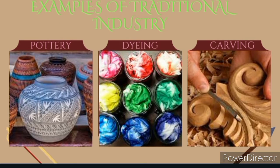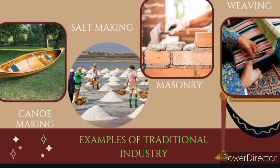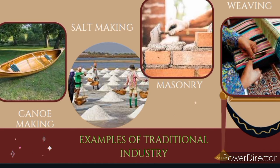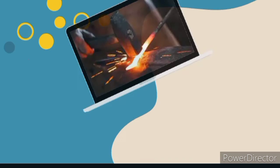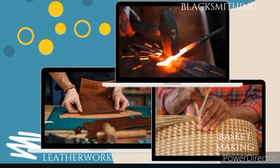Let's check the examples of traditional industries in Nigeria — a number of which still exist in different parts of Nigeria today. Examples include pottery, dyeing, carving, candle building, sock making, mat making, and weaving — those who weave baskets and knit. Also, leather work, blacksmithing, and basket making are all examples of traditional industries in Nigeria.